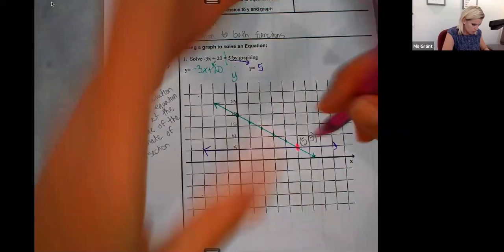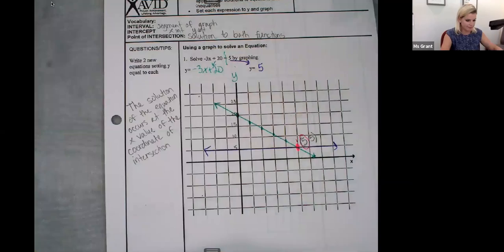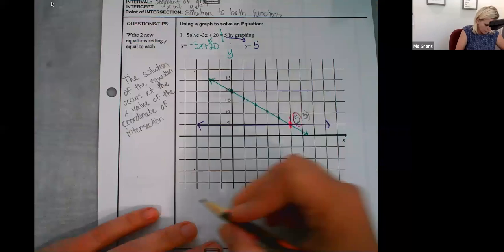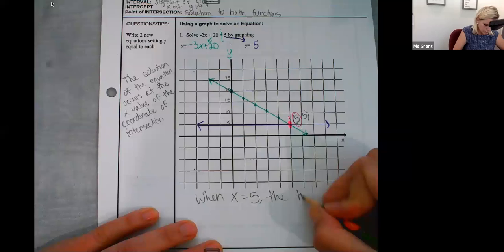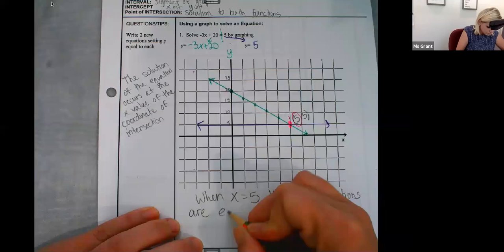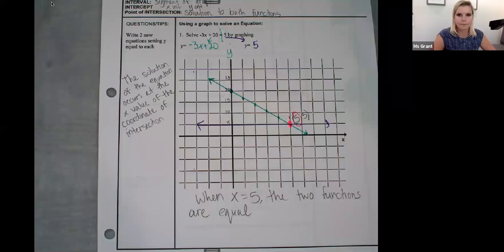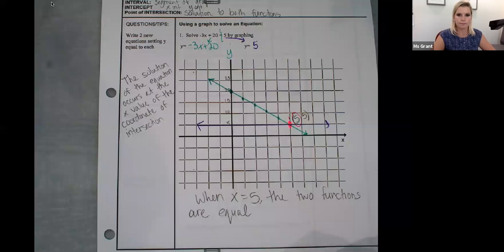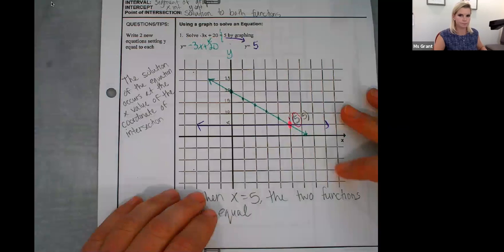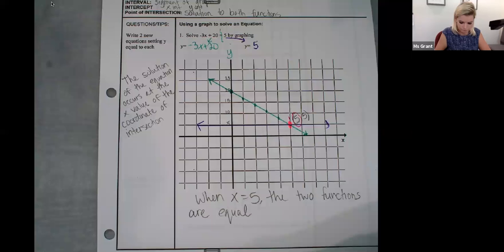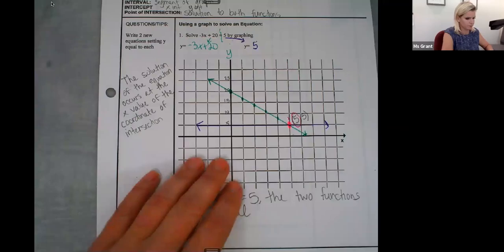And all I care about is the x coordinate. If I were to plug in five up top here for my x, the left side would equal the right side. When x equals five, the two functions are equal.